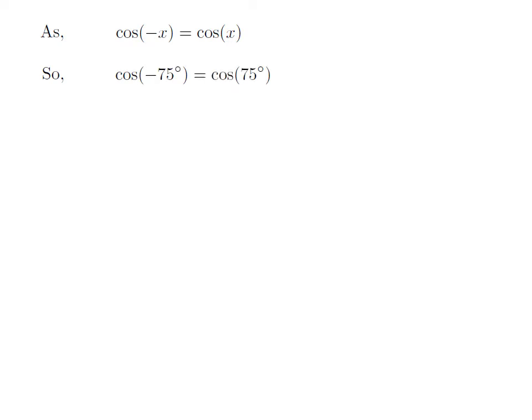Let us apply the above identity for cosine of minus 75 degree. Here x is 75 degree. So cosine of minus 75 degree is equal to cosine of 75 degree.